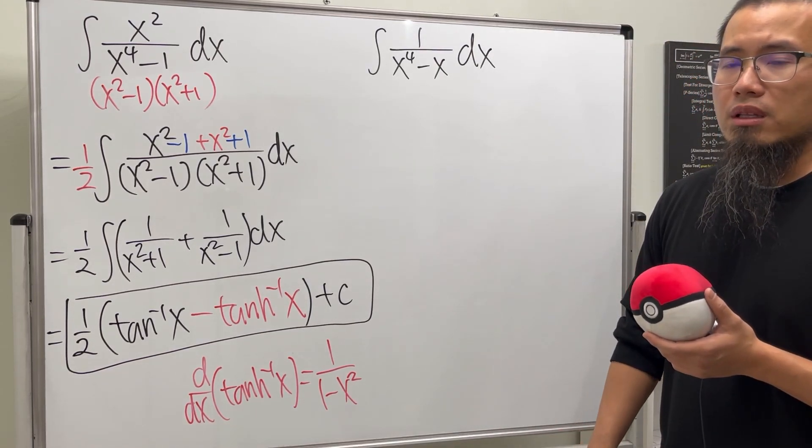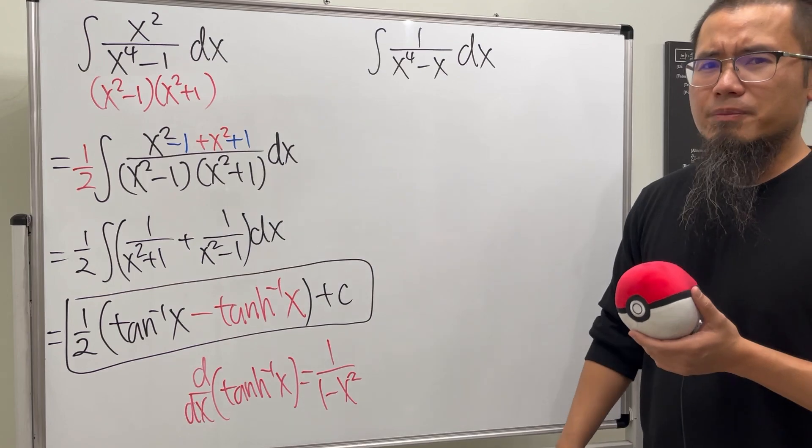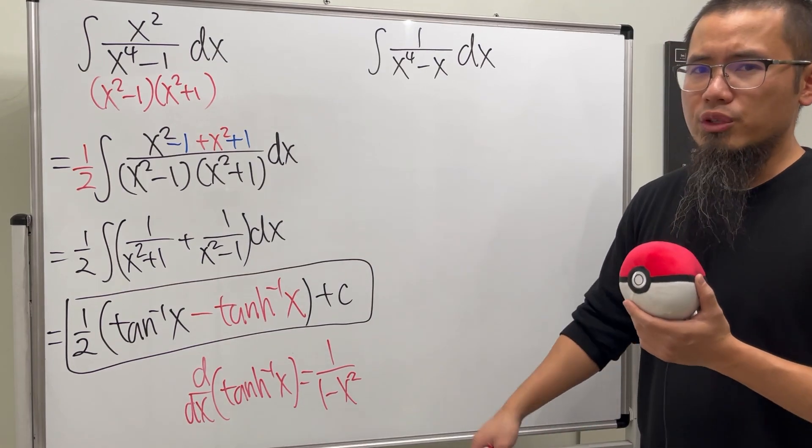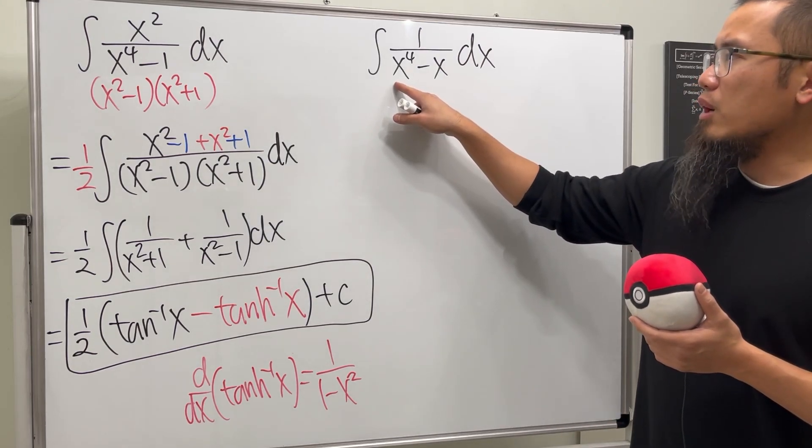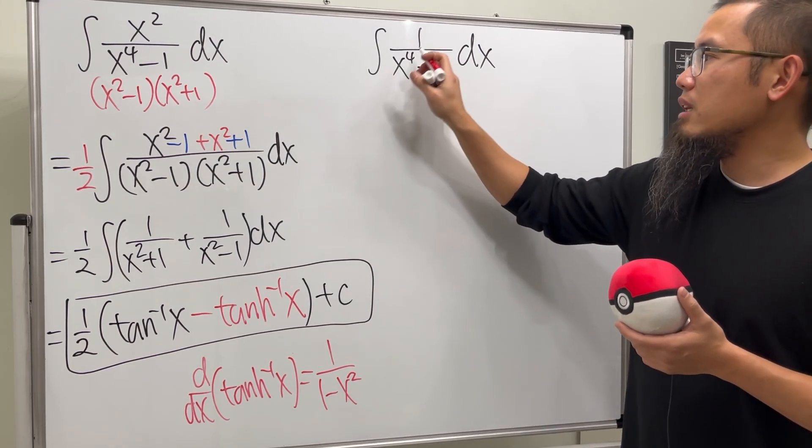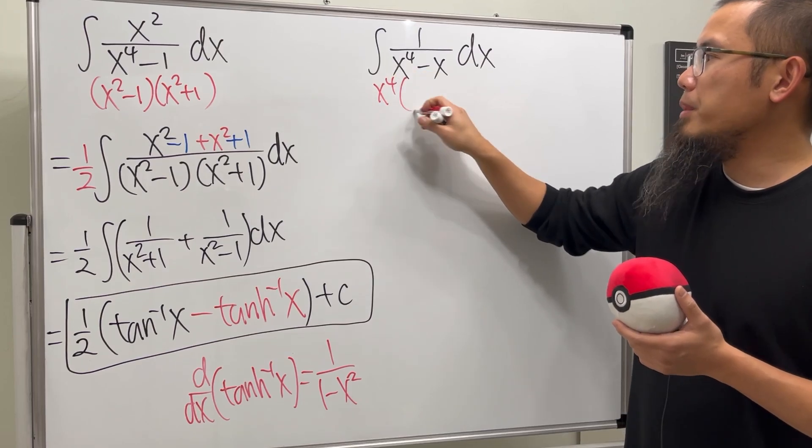But I want to put this down for the answer because you can see how similar this and that is. Okay, what do we do with the second one? Factor out the x? No, don't do that. That's the traditional way. You don't want to do a lot of partial fractions.